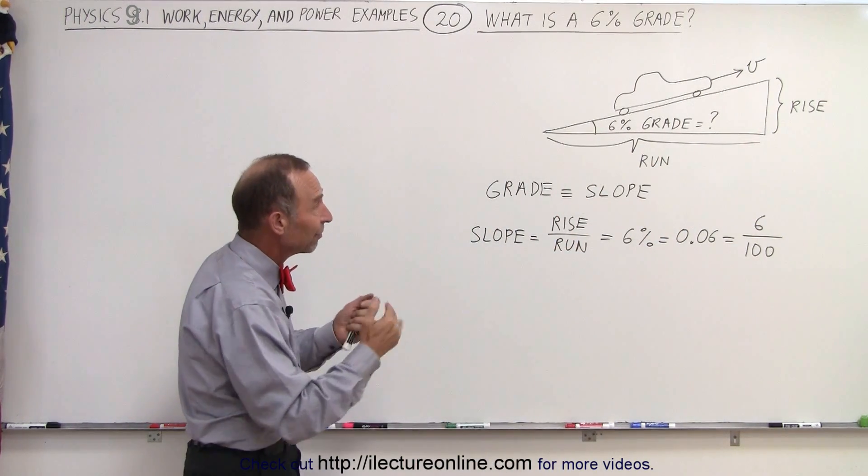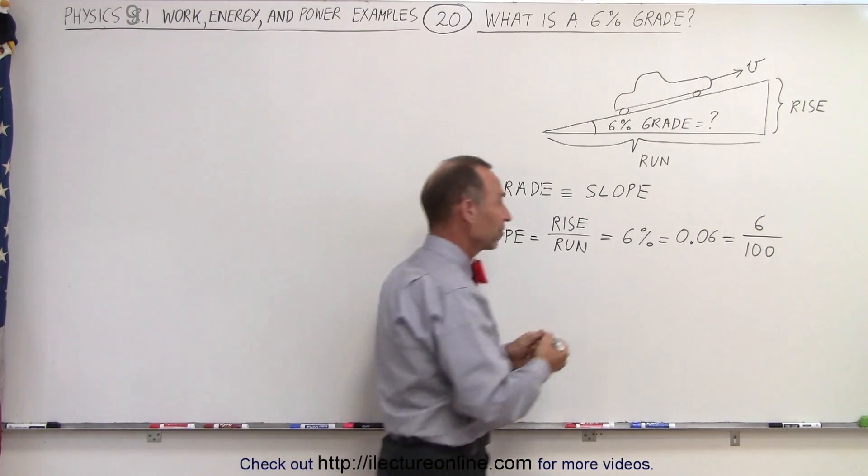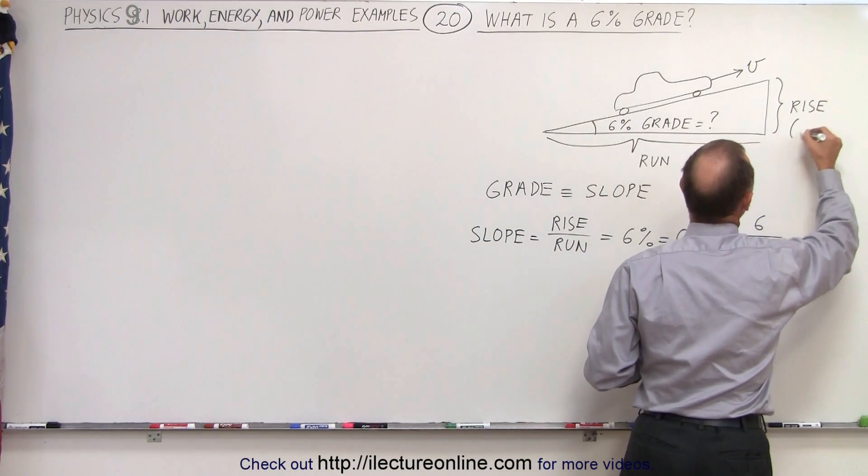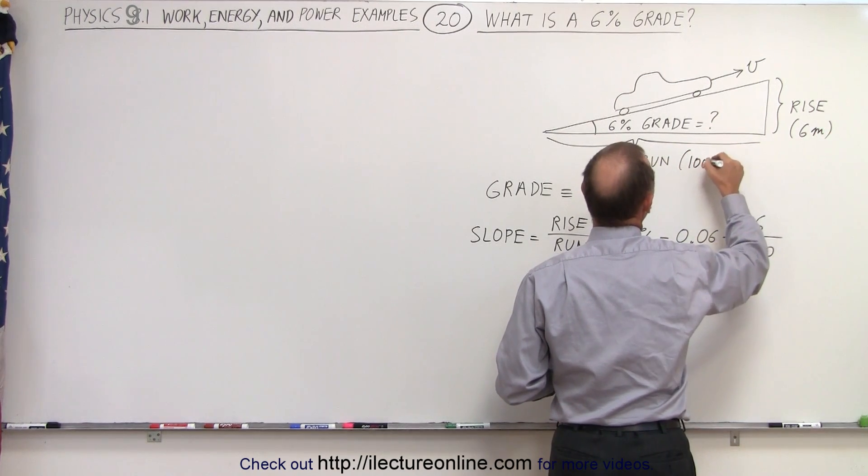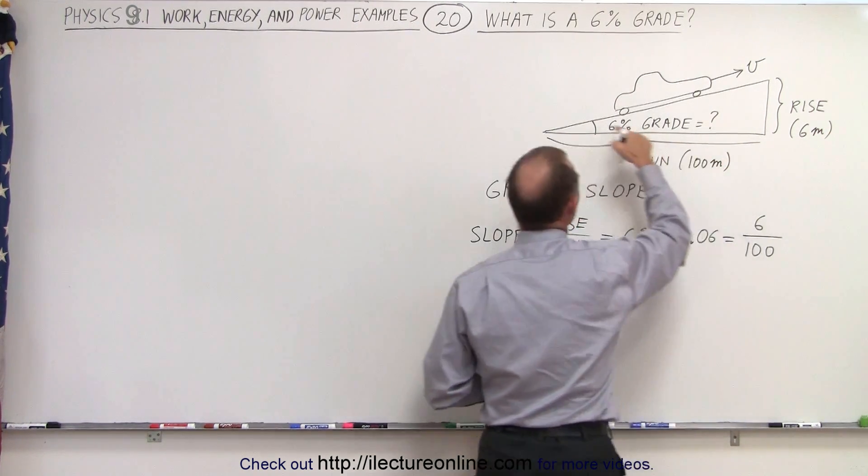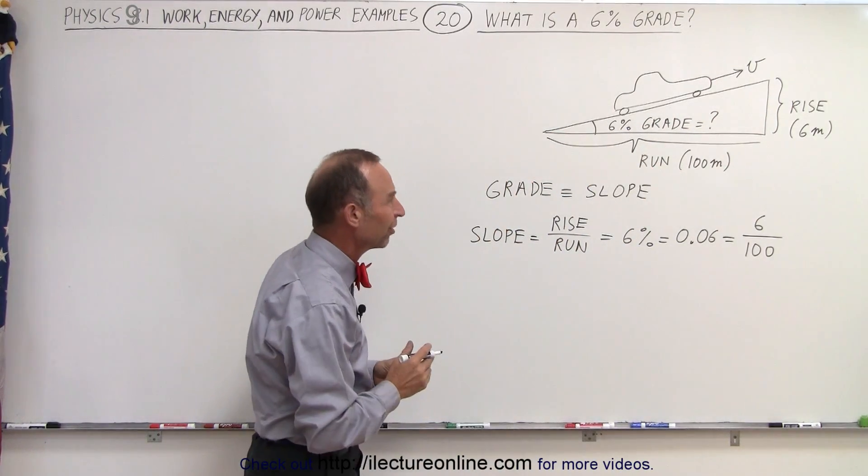So that means that if the rise is 6 meters, the run will be 100 meters. So for example, the rise would be 6 meters when we make a run of 100 meters. Now that doesn't mean that the distance the car traveled is 100 meters, it's the horizontal distance.